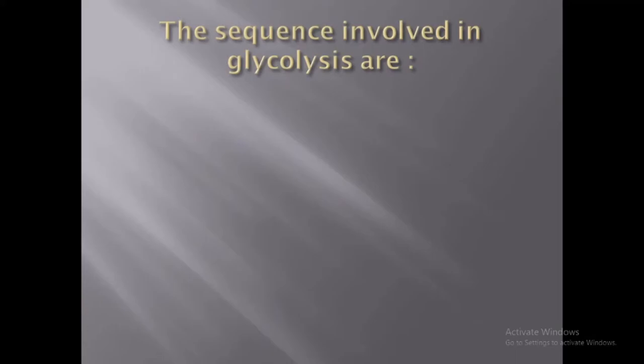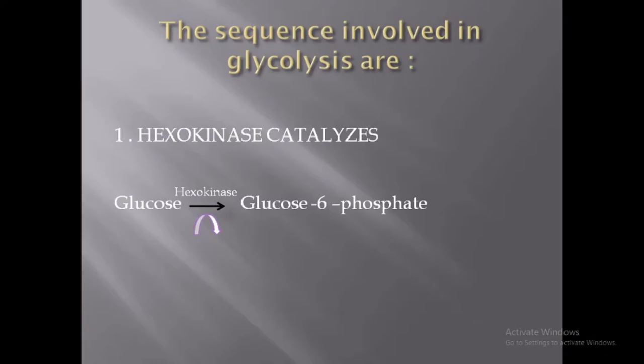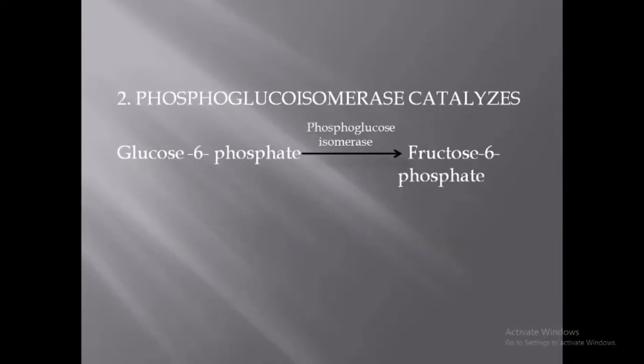In the first step of glycolysis, glucose is converted to glucose-6-phosphate with the help of the enzyme hexokinase. Here, ATP binds to the enzyme as a complex with magnesium ion, and 1 ADP is produced. This is an irreversible reaction.